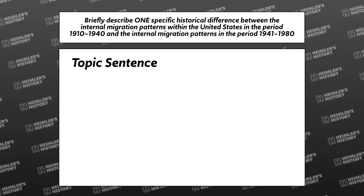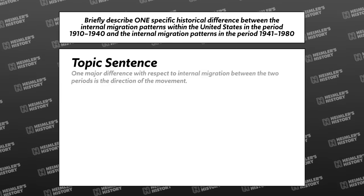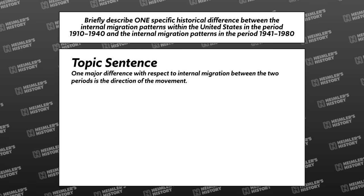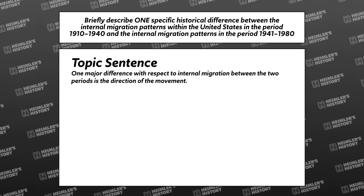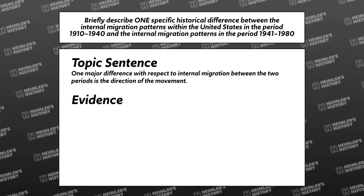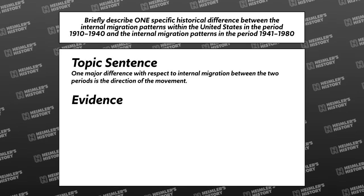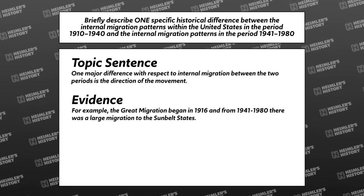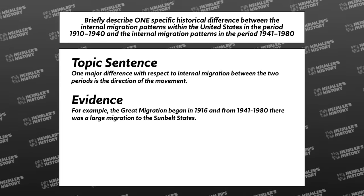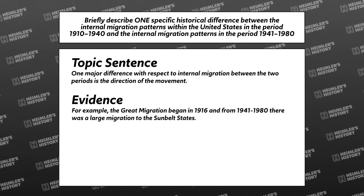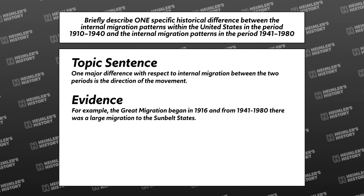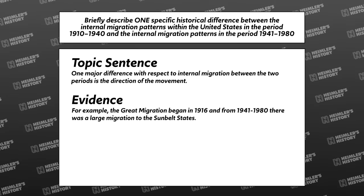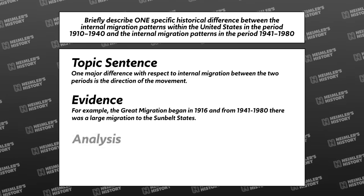Let's start with the T — topic sentence. I would write: 'One major difference with respect to internal migration between the two periods is the direction of the movement.' Now for evidence: 'For example, the Great Migration began in 1916, and from 1941 to 1980 there was a large migration to the Sunbelt states.' We have two pieces of evidence, but they're not yet connected to the claim in the first sentence, so let's move to analysis.